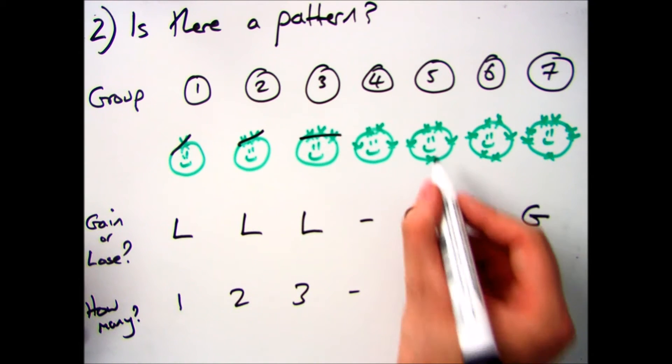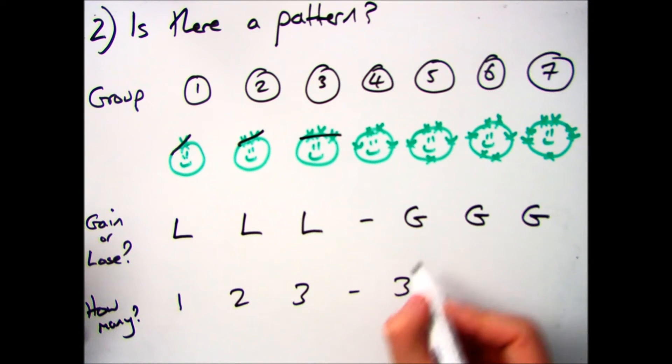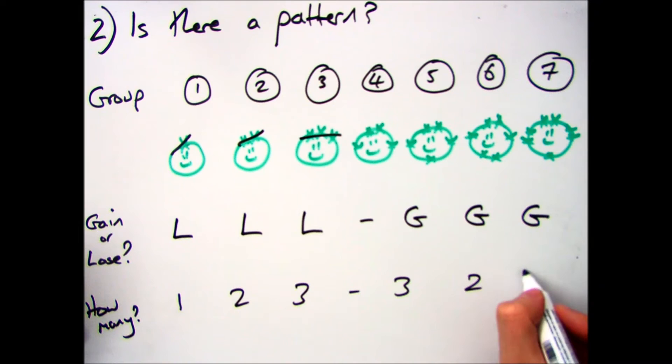It's the opposite way round, a bit like a mirror. When you get to group 5, it needs to gain 3 to get a full outer shell, so it gains 3. Gain 2 for group 6, and group 7 needs one more, so it gains 1.